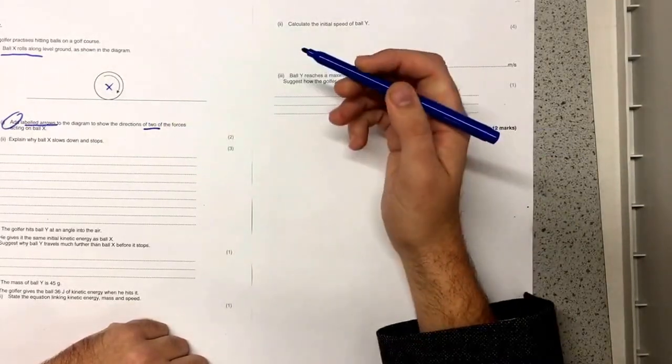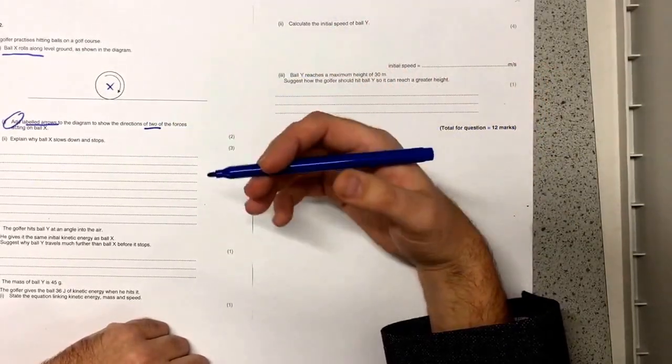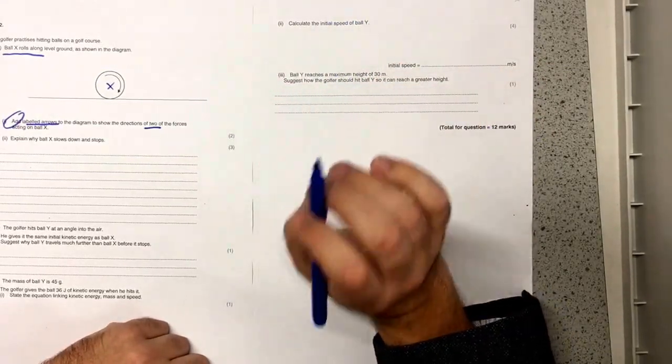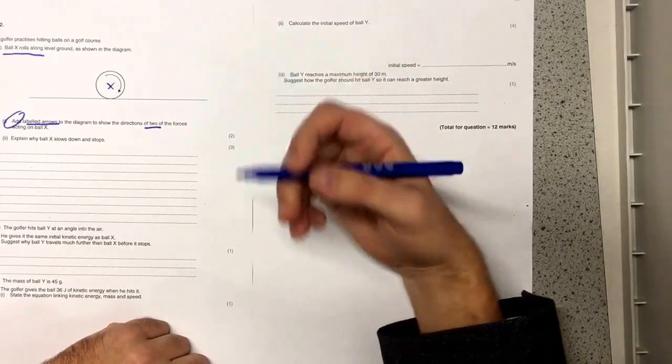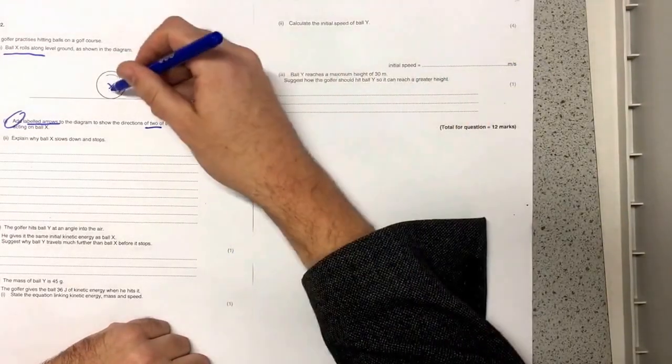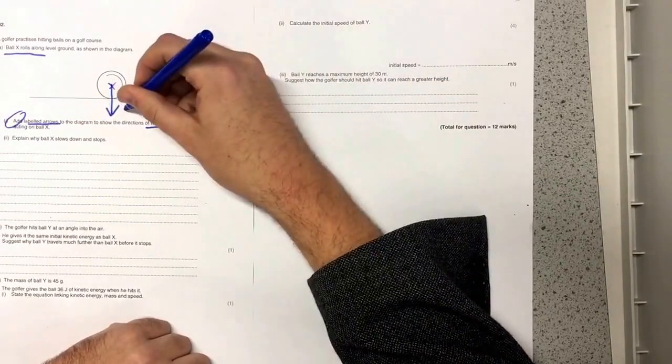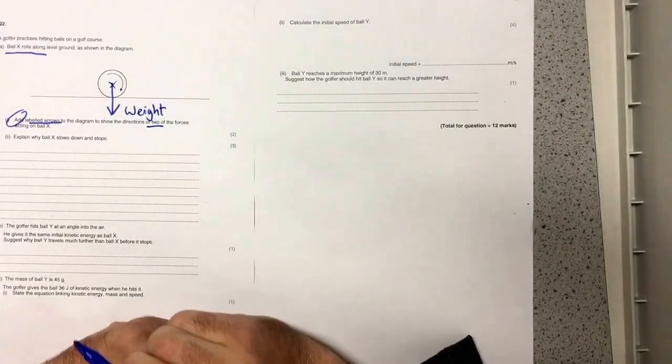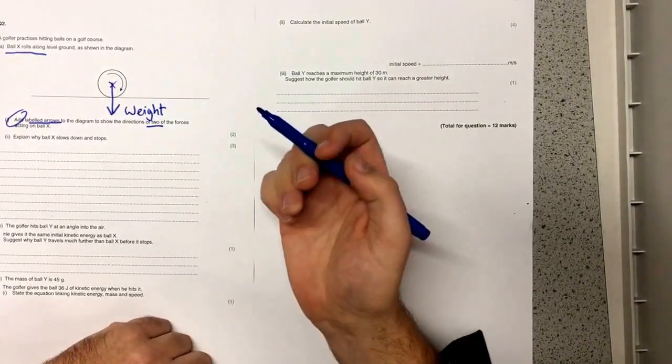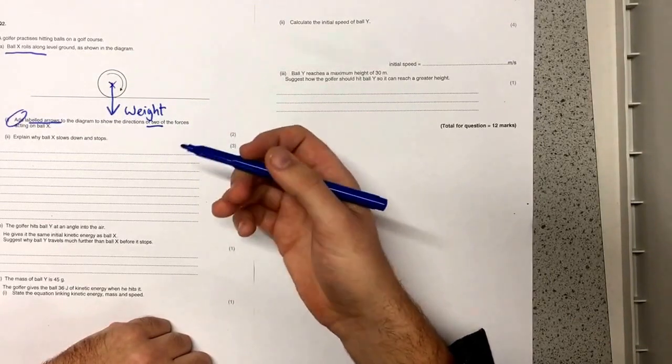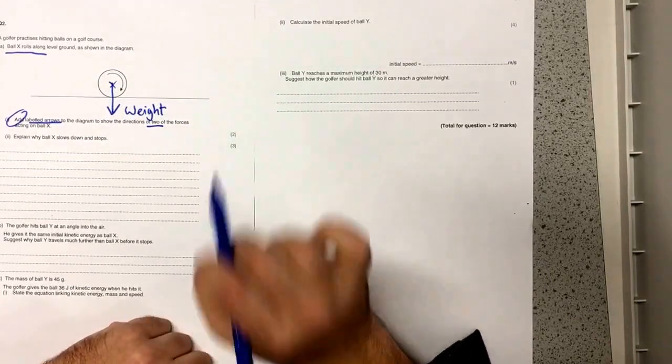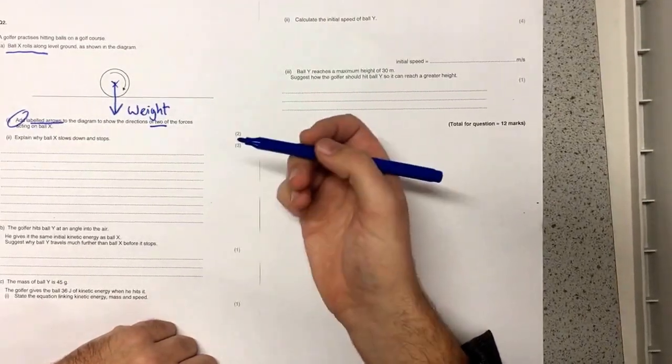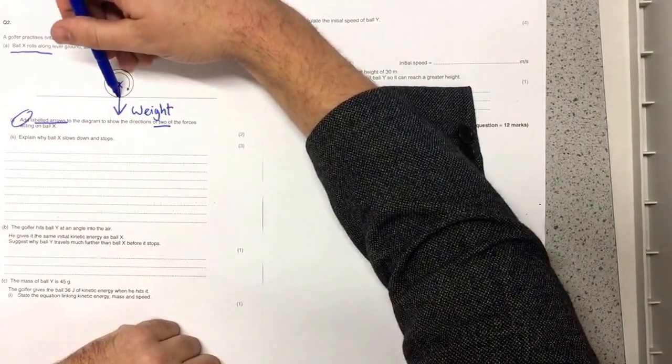So there are two forces we need to add here but there are lots of forces that we could add. Now the one I always think about when drawing force diagrams is weight and that's because whenever we're on earth we've got weight acting down upon us and this golf ball will have weight acting down upon it. Now we need to start thinking about what else could be acting on the ball. It's rolling along the ground and whenever you have two surfaces in contact there's always going to be some friction and so that's the second force I'm going to add in here.